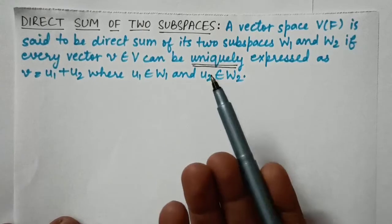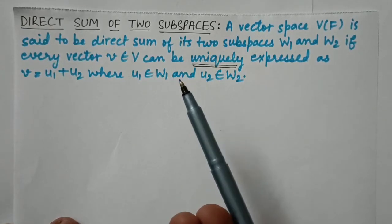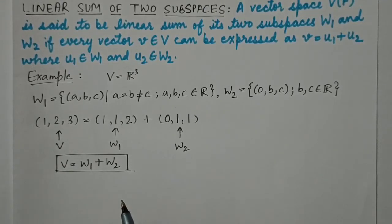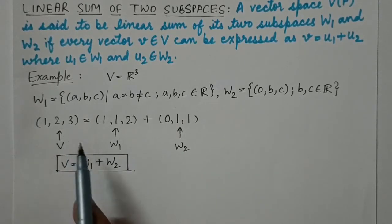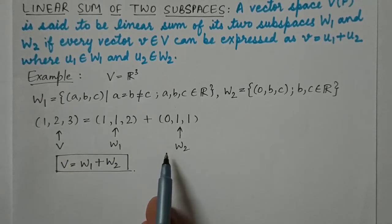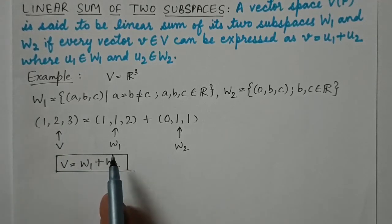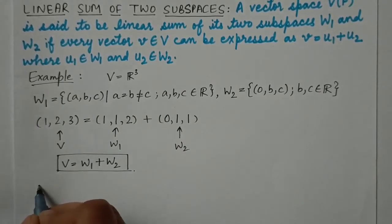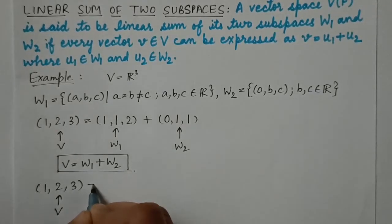To understand what 'uniquely' means in the direct sum definition, let's go back to the linear sum example. We had element (1, 2, 3) belonging to V expressed as the sum of elements from W1 and W2. Let's see whether we can express the same element (1, 2, 3) as the sum of elements from W1 and W2 in any other way.